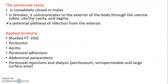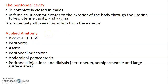The peritoneal cavity in males is completely closed with no communication. But in females, there is an opening of the fallopian tubes, so the peritoneal cavity communicates with the exterior of the body through the uterine tubes, uterine cavity, and vagina. This provides a potential pathway for infection from outside. Because of this, we have an investigation called hysterosalpingogram — when the fallopian tubes are blocked, contrast media can be passed from the vagina through the uterus to the fallopian tube, which can help unblock it, with contrast medium pouring into the peritoneal cavity.